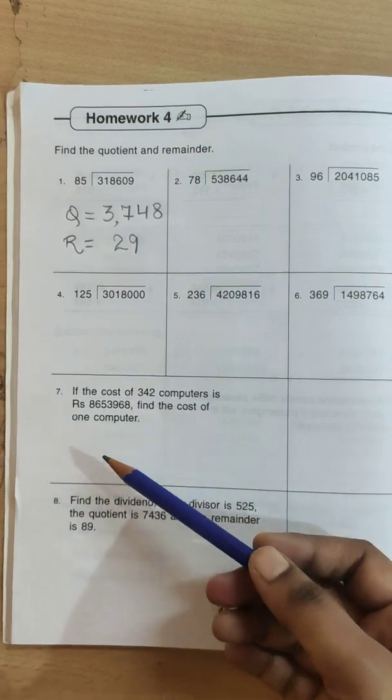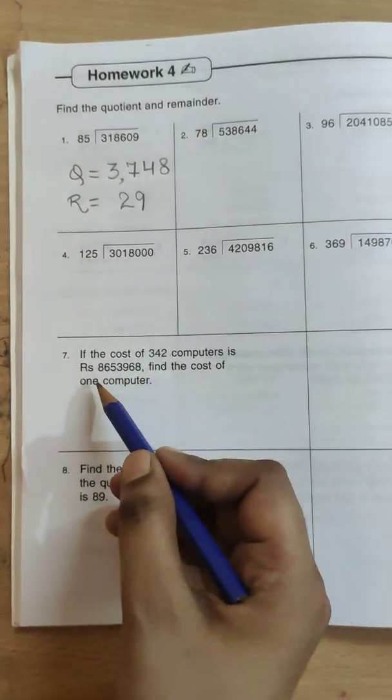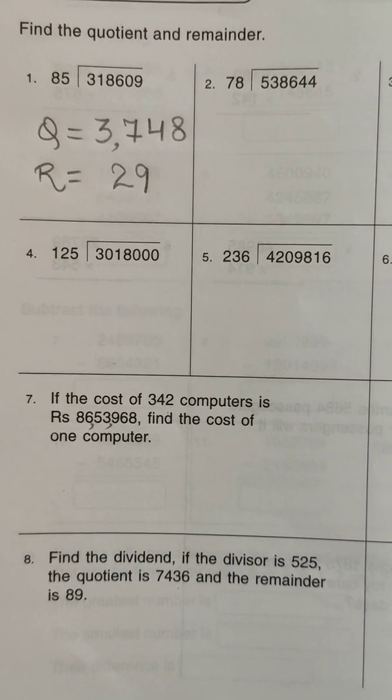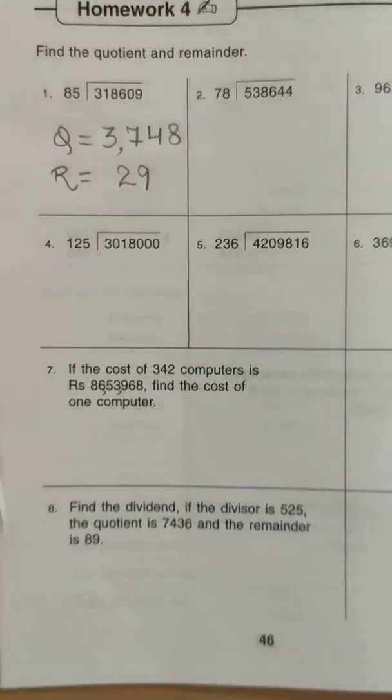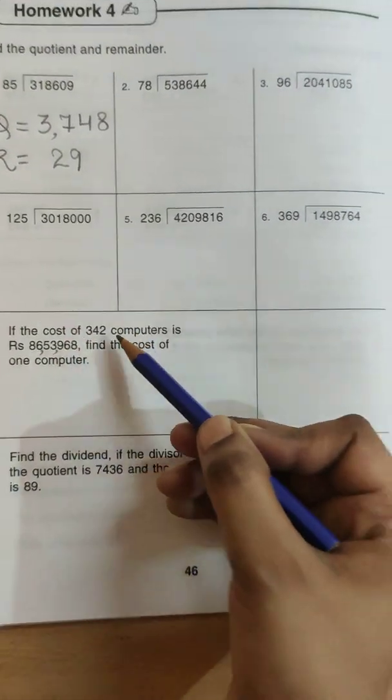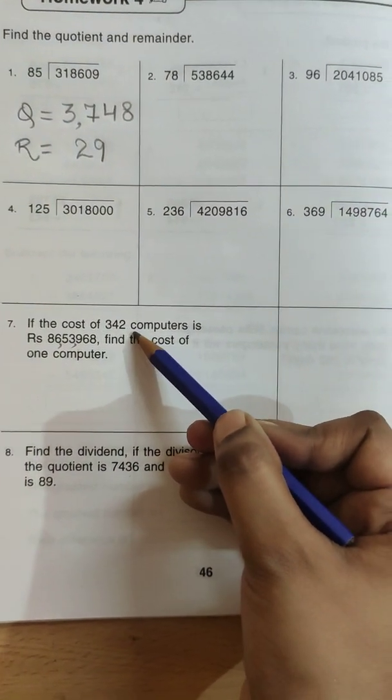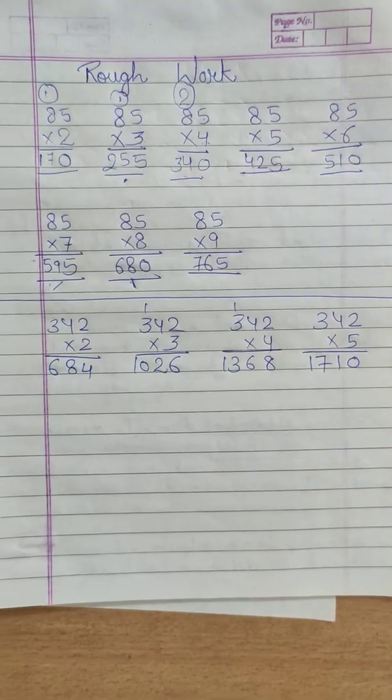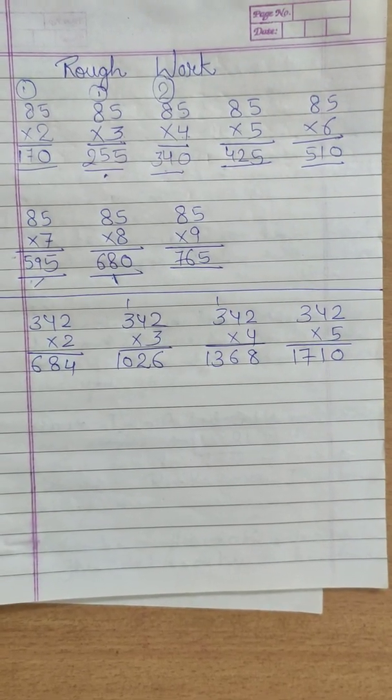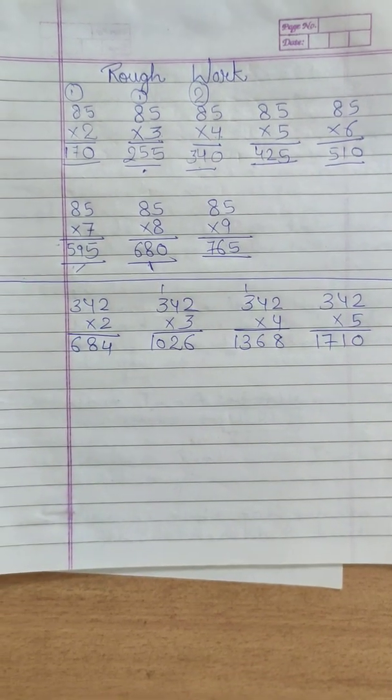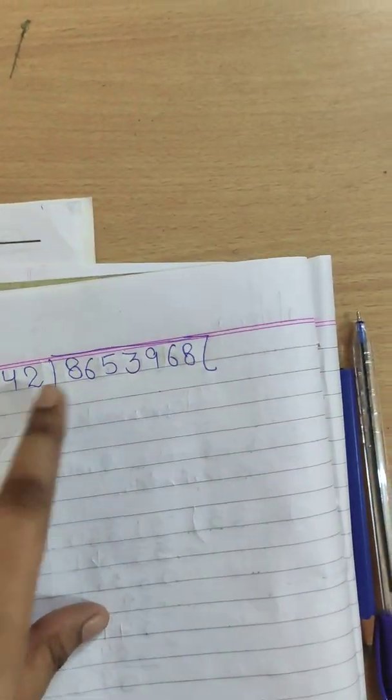Now let's read our question number 7. If cost of 342 computers is rupees 86,53,968 find the cost of one computer. So to find the cost of one computer we need to divide the given number with the number of computers. So let's divide it in here and then find the cost of one computer.